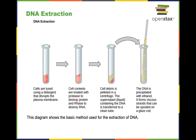Then the cell contents are treated with protease to destroy proteins, because we really don't want proteins. We also add RNase, an enzyme that gets rid of RNA, because we're only looking for DNA. Then the cell debris — parts of the cell that we don't want — that is insoluble, is separated from the soluble part in which DNA is sitting, and that's done by centrifugation.